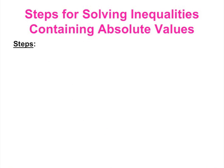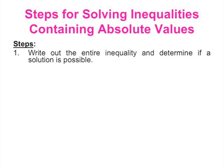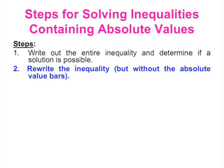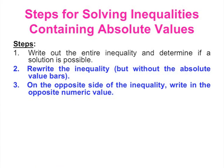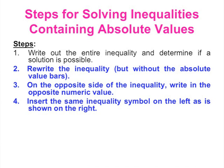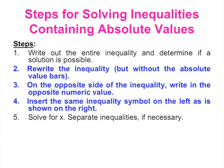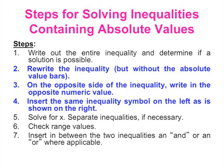The steps that will be performed are as follows: write out the entire inequality and determine if a solution is possible; rewrite the inequality but without the absolute value bars; on the opposite side of the inequality write in the opposite numeric value; insert the same inequality symbol on the left as shown on the right; solve for x; separate the inequalities if necessary; check range values; and insert in between the two inequalities an 'and' or an 'or' where applicable.